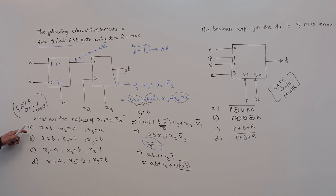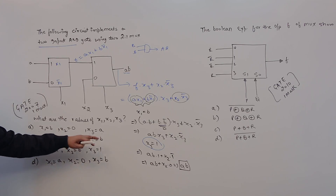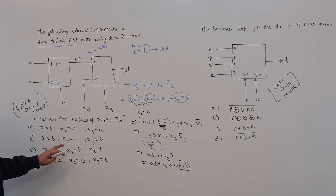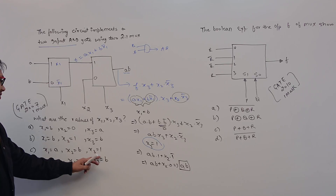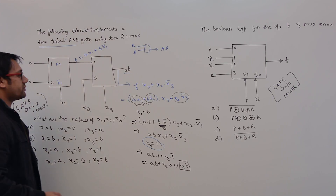So option A is not matching our assumed values. The second option says x1=B, x2=1, and x3=B. But we derived x3 as 1, and this option has x3=B, so it is not matching either. Since the options we assumed are not matching, let us use another method of solving this.